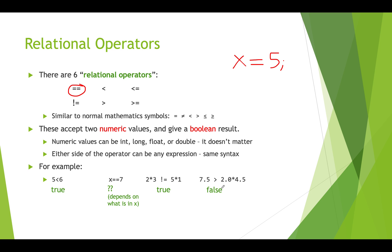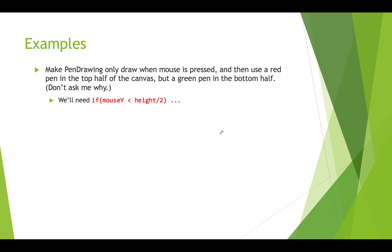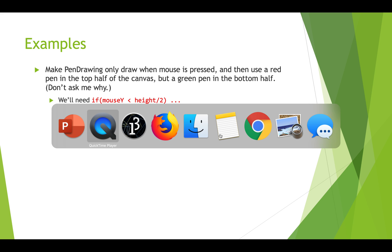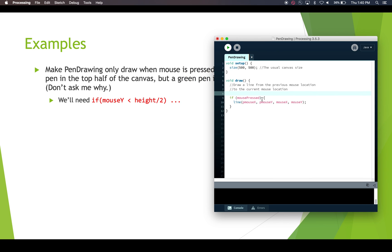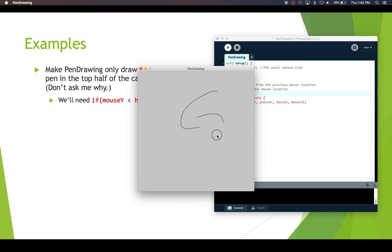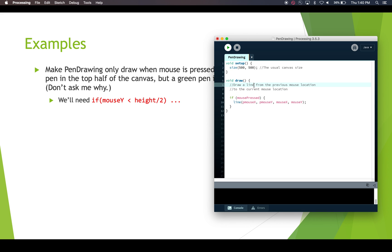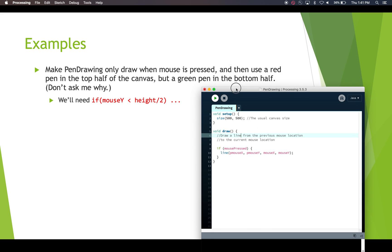Those are examples of using relational operators. Again, we can have literals, variables, or expressions on either side of these relational operators, but they've got to be numeric, and the result we get is Boolean. So how do we use this in code? We've had a pen drawing example in Processing where we draw lines from old x, y to new x, y. We can control this better using mouse pressed in the if statement. We only draw when we've got the mouse button pressed, but we can also do things like change the fill color depending on where we are on the canvas using relational operators.